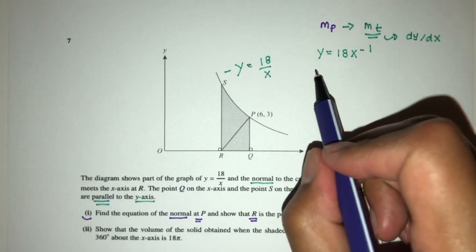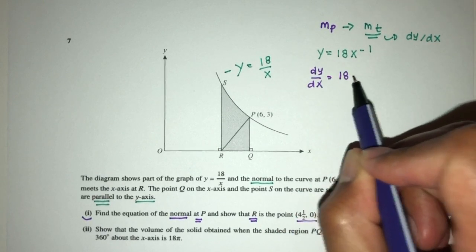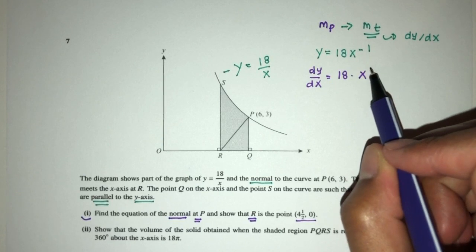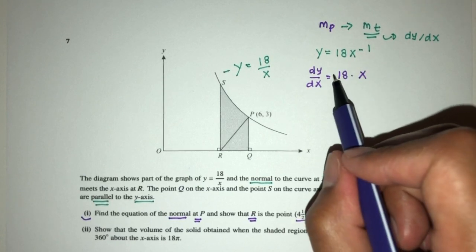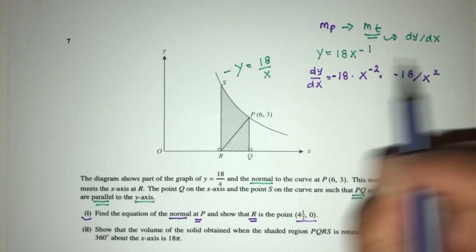Now to find dy/dx, that will be 18, multiply by minus 1 first, then minus 2. That should be minus 18 over x squared.